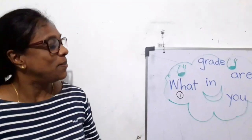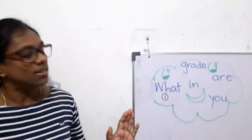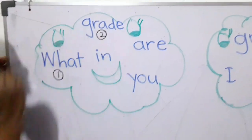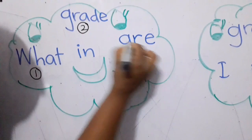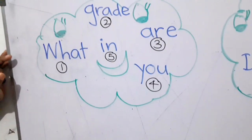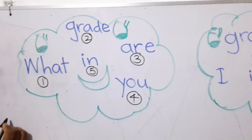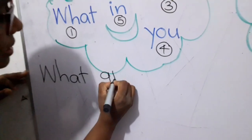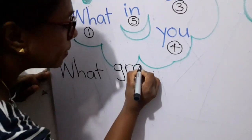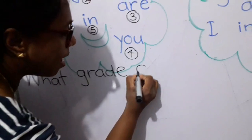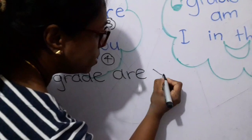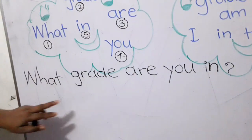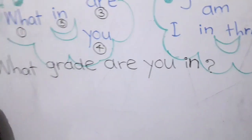Did you get the question and the answer? Let's see. What's the very first word when you build up the question? That is 'What' — number one. Now the second word, third one, fourth one — this is the last one. Now tell me the question. I'm going to write it down: What — grade — are you in?